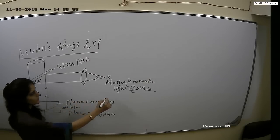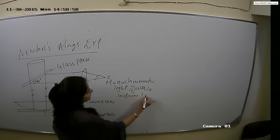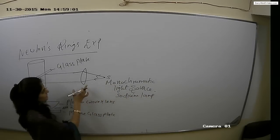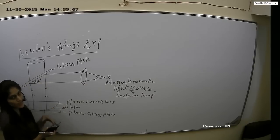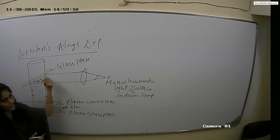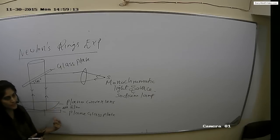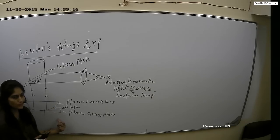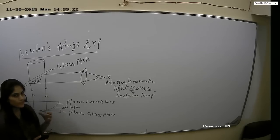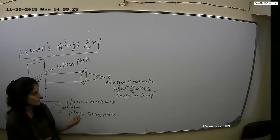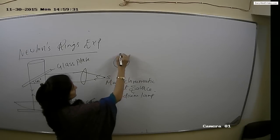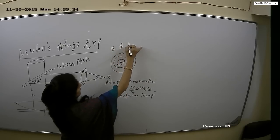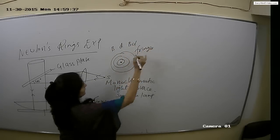Here we are using a sodium lamp as the monochromatic light source. When light from this source goes through the lens and reaches the glass plate at 45 degrees, light is directed to the plano-convex lens and plain glass plate. An air film is formed between them, and light reflects from the upper and lower surface of the air film. We get two rays, interference occurs between them, and we get alternate bright and dark circular fringes.